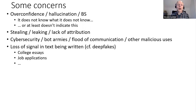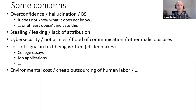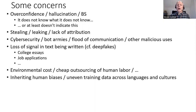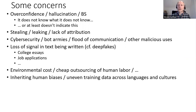There are various concerns about even building and training these systems in the first place — the environmental cost, and the use of human labor to steer these systems, which tends to get outsourced to other countries for low wages. There are also concerns about inheriting human biases. That applicant-classification example is doing its work based on what it's learned from all the data it was trained on, which reflects lots of human biases. Similarly, even though it performs well in French, training data is not even across languages and cultures, and many languages are under-resourced.